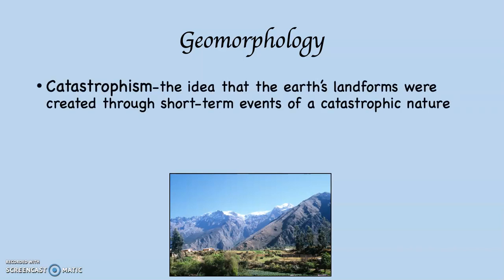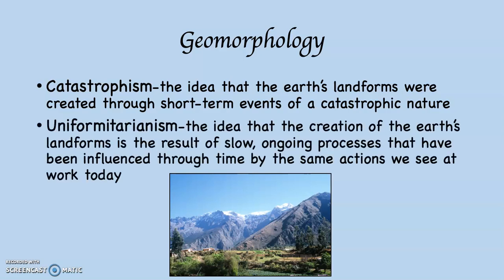Two concepts have come about through time that are attempts to explain how we have the planet we have — in other words, why the landscape looks the way it looks. So instead of just having a perfectly spherical planet, what we have really is a planet with a lot of bumps on it and indentations and cracks in it. Both of these concepts began to come about in the 1800s. Catastrophism, which is derived from a Greek word catastrophe, is the idea that the Earth's landforms were created through short-term events of a catastrophic nature. And uniformitarianism is the idea that the creation of the Earth's landforms is a result of slow ongoing processes that have been influenced through time by the same actions we see at work today. Catastrophism held some sway during the middle of the 1800s and really up through some part of the 20th century, but really this has fallen by the wayside. It was an attempt to squeeze Earth history into a very small amount of time.